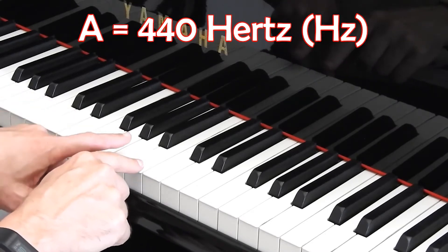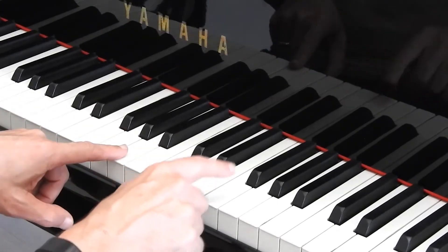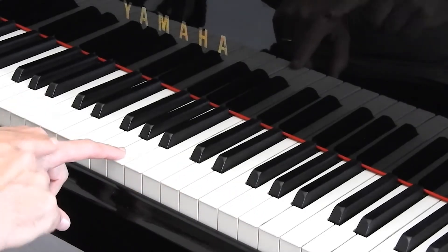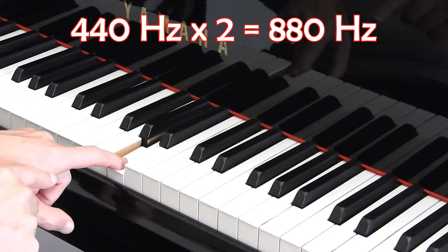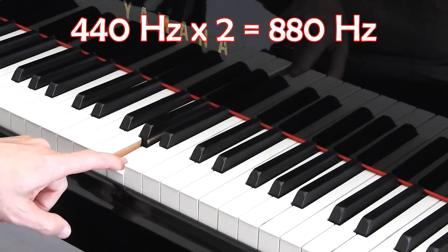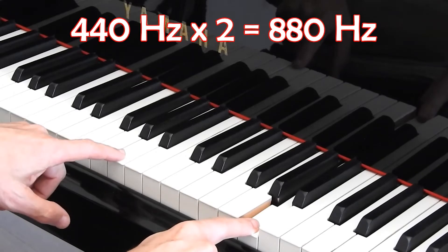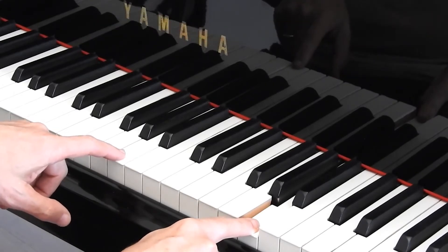Now if you look on the piano keyboard, the notes are A, B, C, D, E, F, G, and then A, A again. So if you double the frequency, if you go 440, 440 Hertz, two times that is 880, that's the next A on the scale.